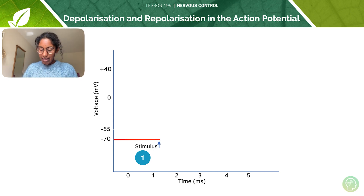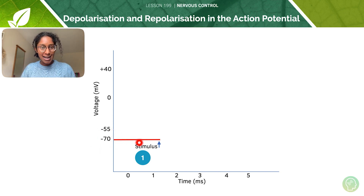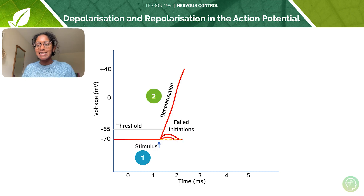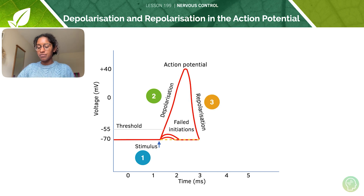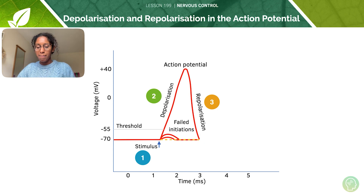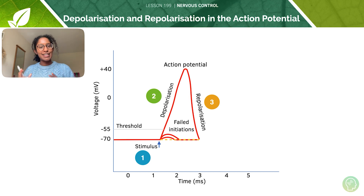Let's talk through this graph. This here is our resting membrane potential at minus 70 millivolts. Our neuron is very happy at rest, but then it receives a stimulus and we get depolarisation up to the threshold, at which point we get more depolarisation — that is our action potential formed — and subsequently we get repolarisation of the membrane.